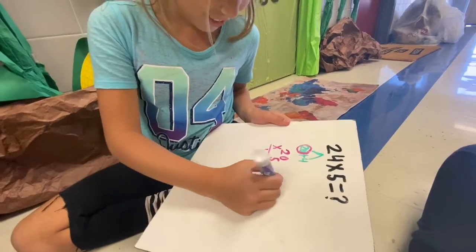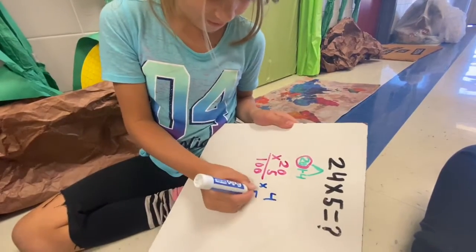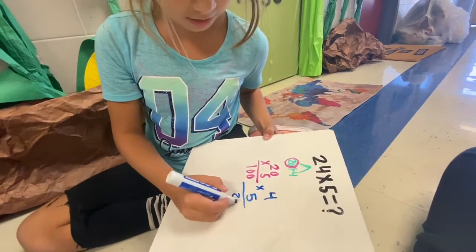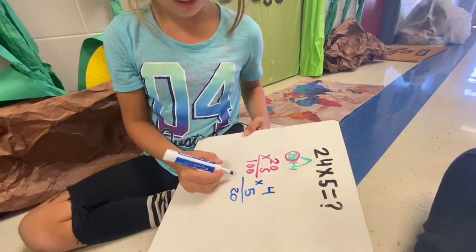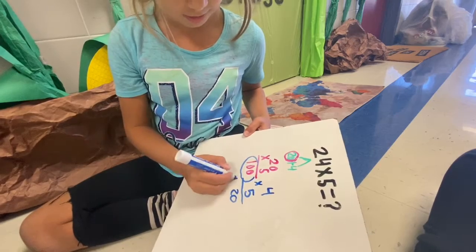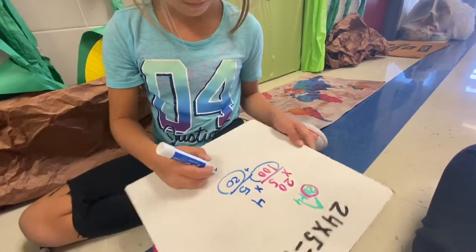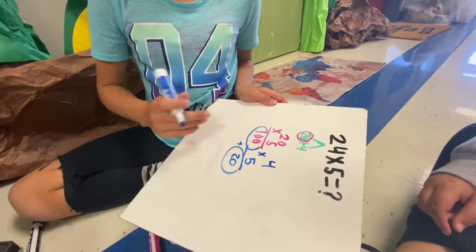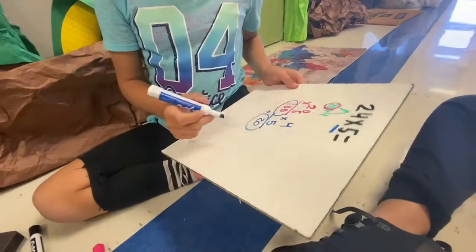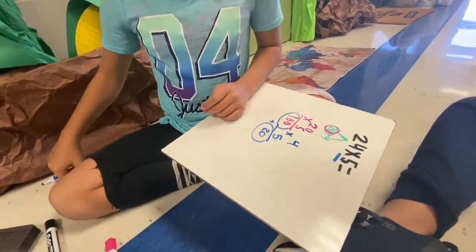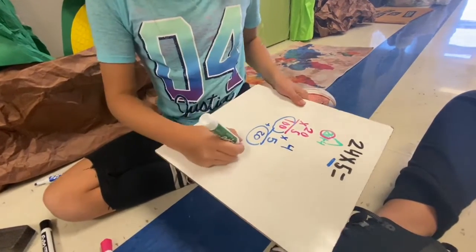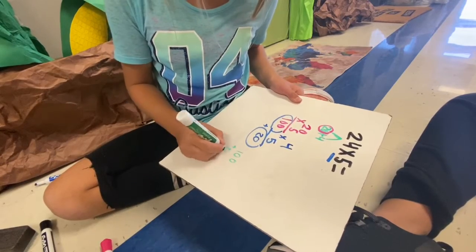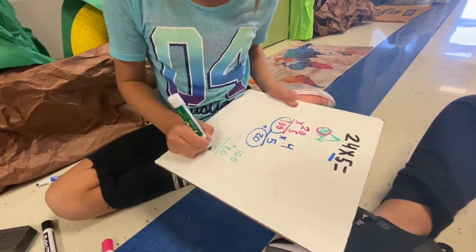Now you're going to do 4 times 5 and that equals 20, so you're going to add 100 plus 20. I'll write that down — 100 plus 20 equals 120.